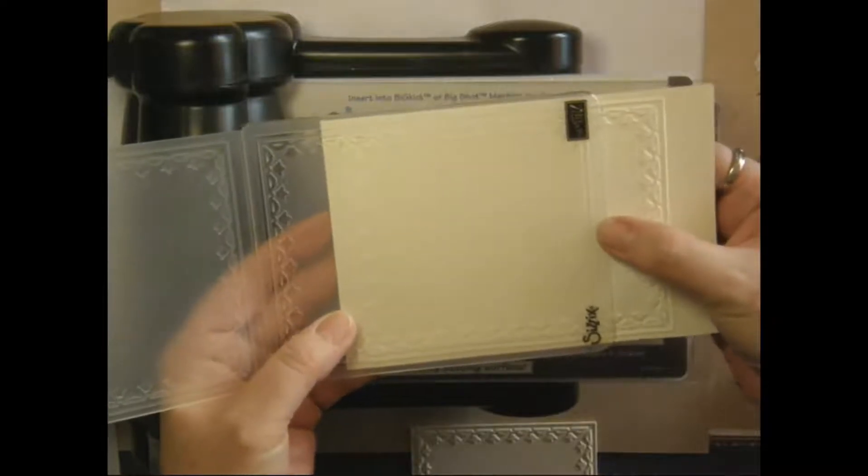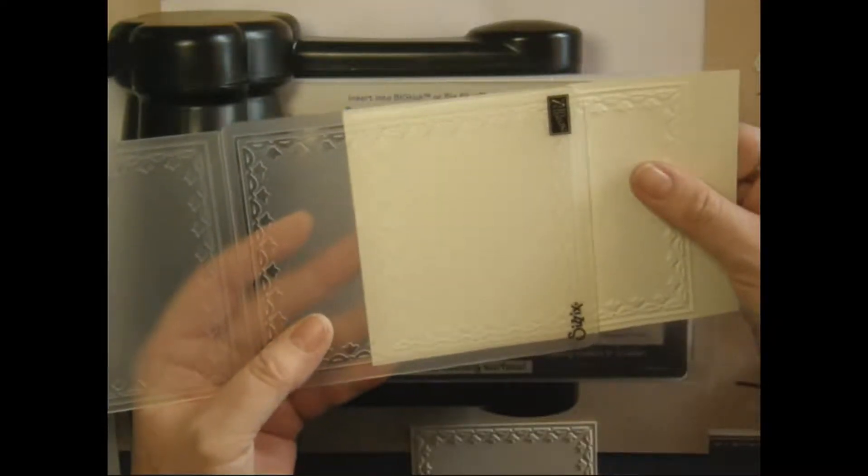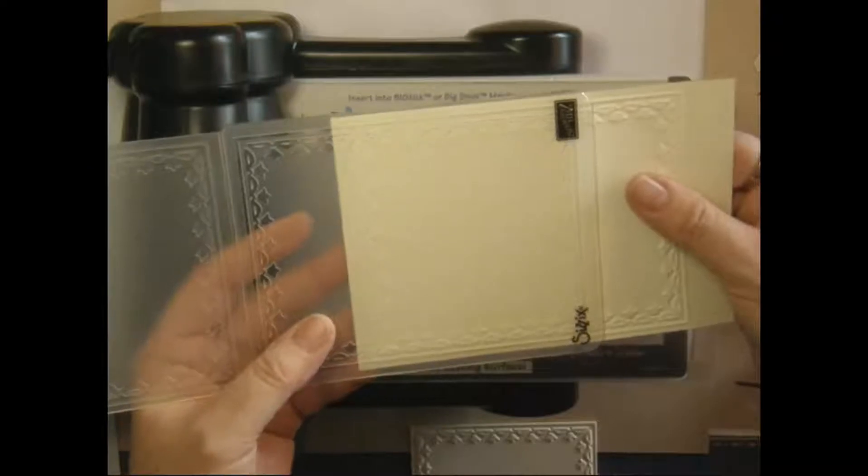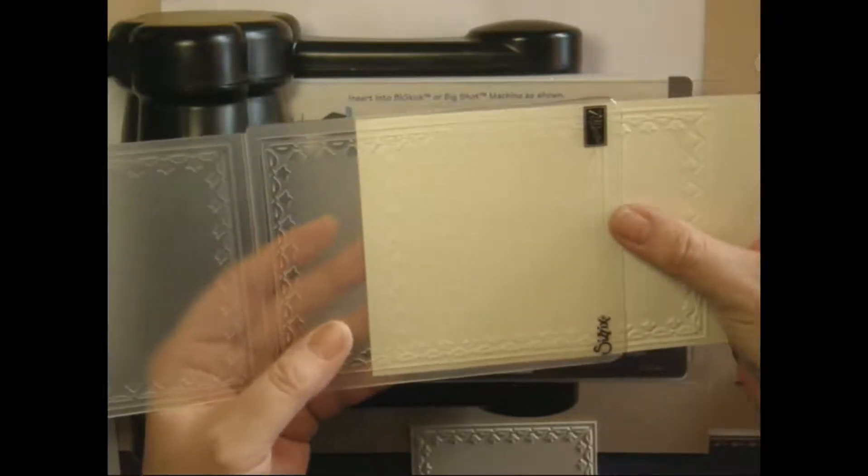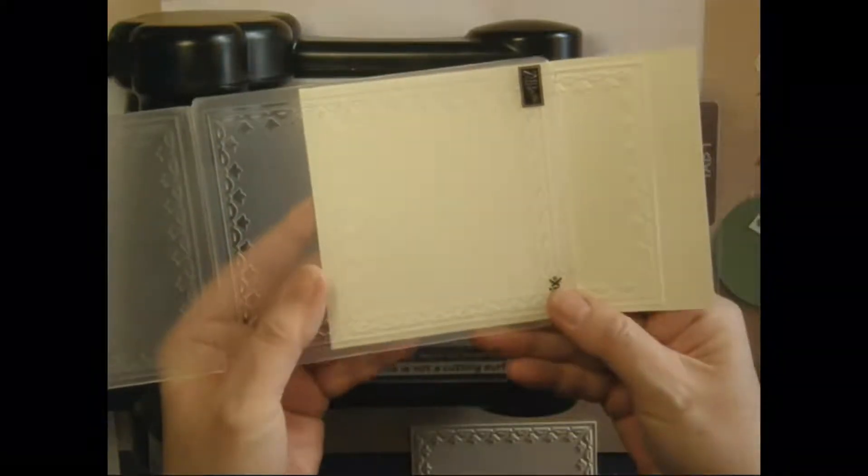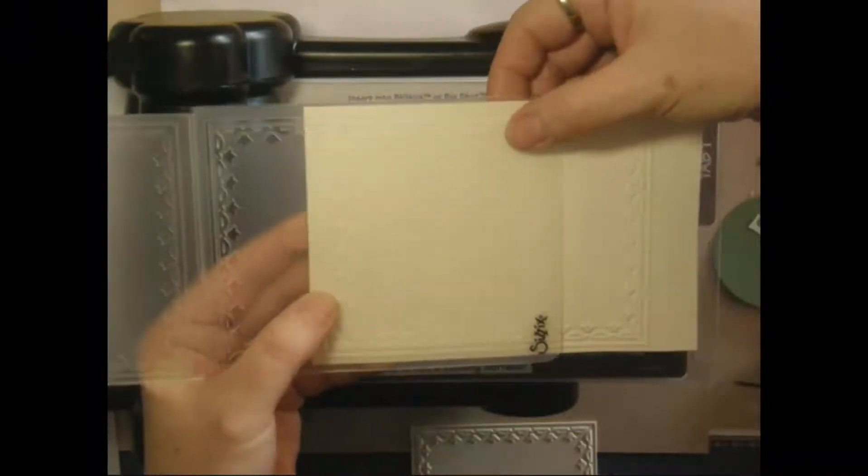So to make this smaller, you simply slide this out to the different sizes that you want. We're going to go right there. Line this up on the top. It'll just slide right into place.